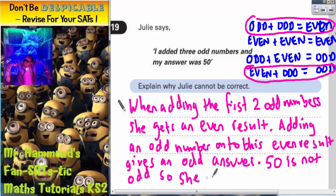So let's just read that again. When adding the first two odd numbers, she gets an even result. Adding an odd number onto this even result gives an odd answer. 50 is not odd, so she cannot be correct. And that's all you need to write to explain the question.